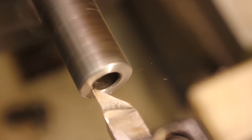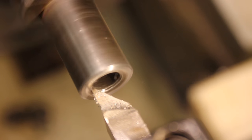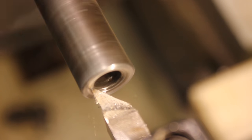Finally, the compound rest set at 11 degrees can be used to create the barrel crown. A light chamfer can be placed on the outside of the barrel to make the crowning job easy on the eyes.